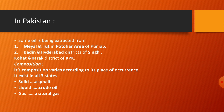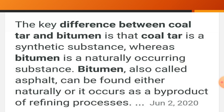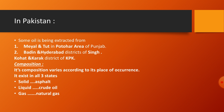Asphalt is also called bitumen - a sticky, black, viscous substance. It is often associated with coal tar. The difference between coal tar and bitumen is that coal tar is a synthetic substance, meaning it is manufactured, while bitumen is a naturally occurring substance. Bitumen can be found either naturally or as a by-product of the refining of petroleum. In liquid form, petroleum occurs as crude oil, and in gaseous state it is natural gas.